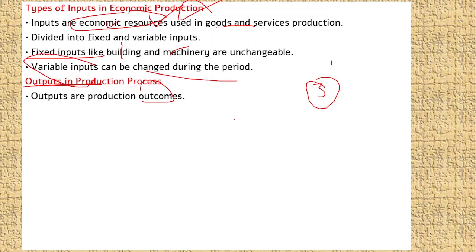The output is the final outcome of the product. The output category includes tangible and intangible products.